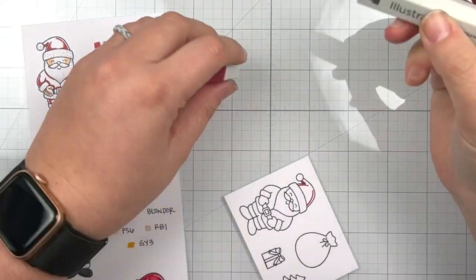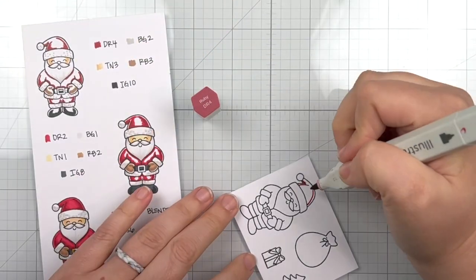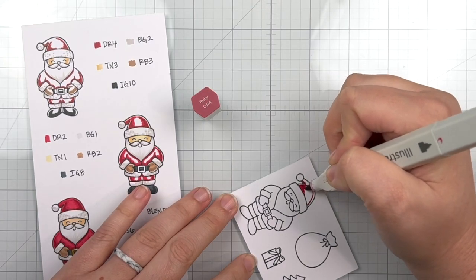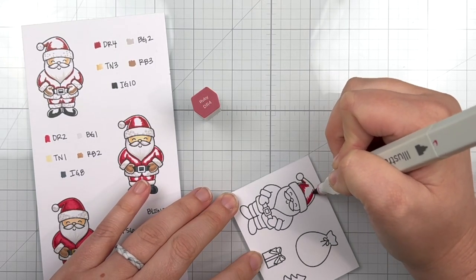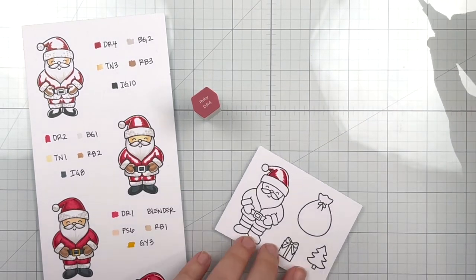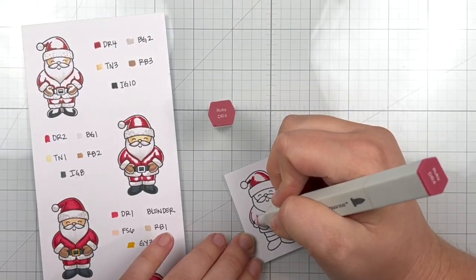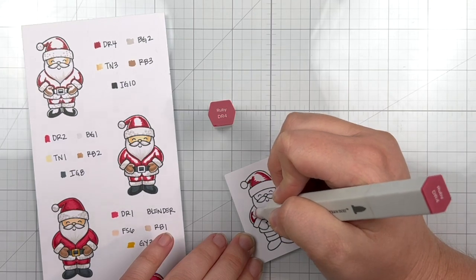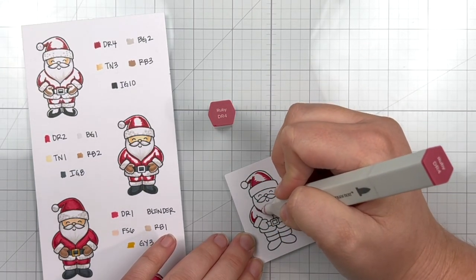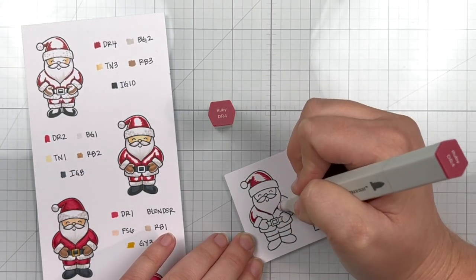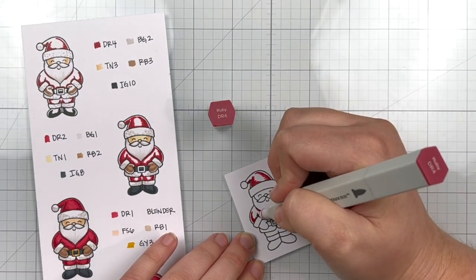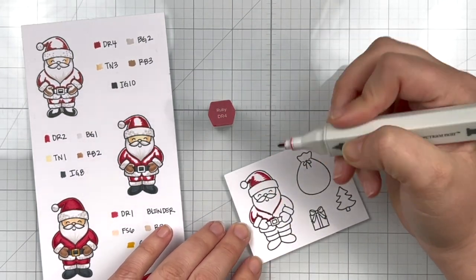I'll also color in the fuzziness of my Santa's hat and coat and pants as well as his beard with brown grays. So BG2, BG1 and then I also use a blender on his beard. I'm going in with some lighter skin tone colors, but please use your favorite color combination when it comes to skin tones.